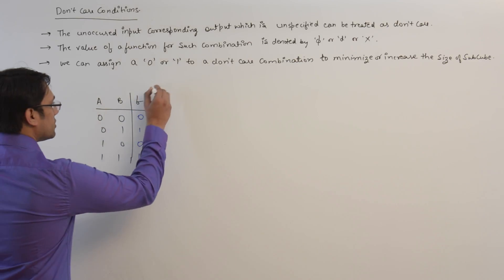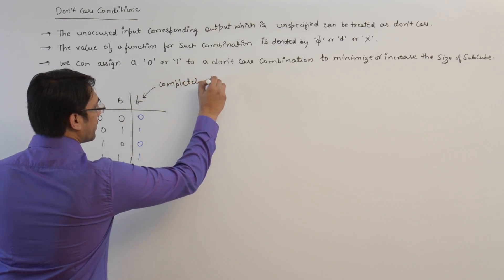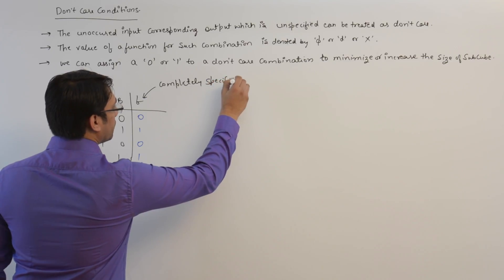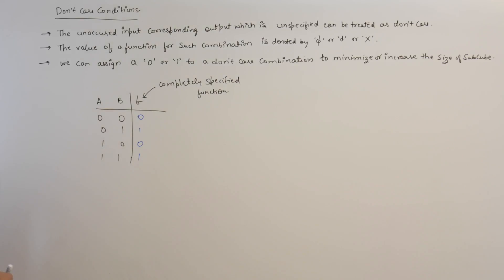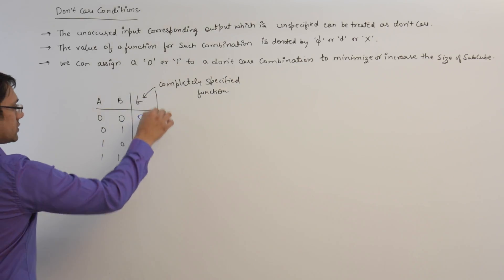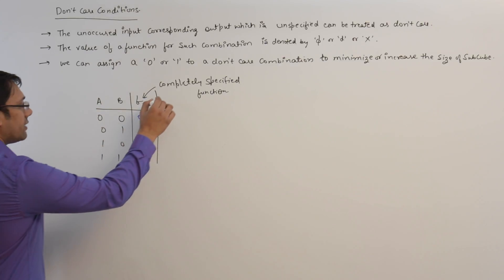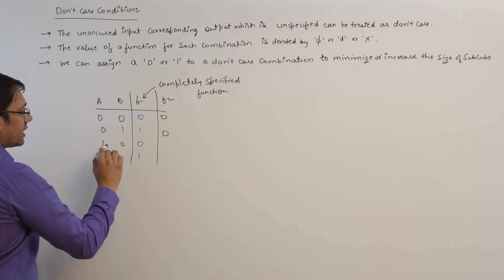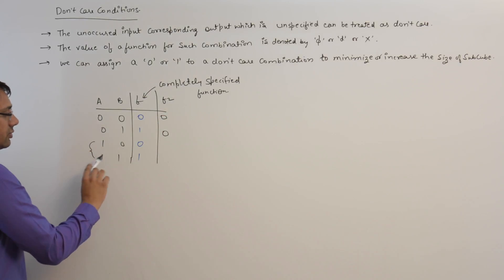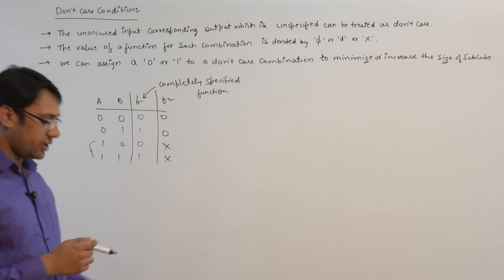Completely specified functions are those where a value is defined for every input combination. But for some functions, if we don't specify values for certain combinations — for example if we make function F2 and specify a value for 00 but not for 10 and 11 — then such combinations can be denoted by 'don't care.'